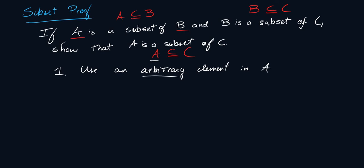And arbitrary here is just a very fancy word to say that the only thing you know about your element is that it is contained in A. That's all you know about your element.